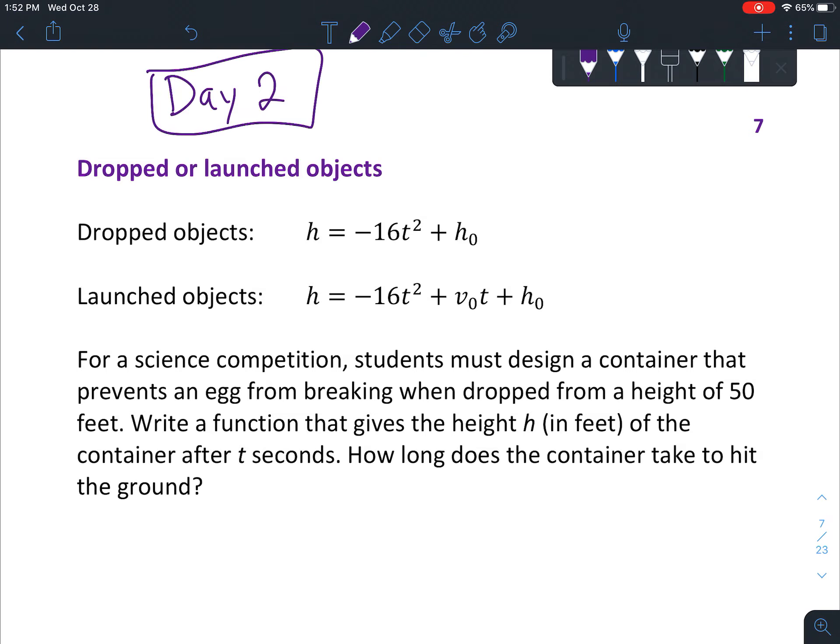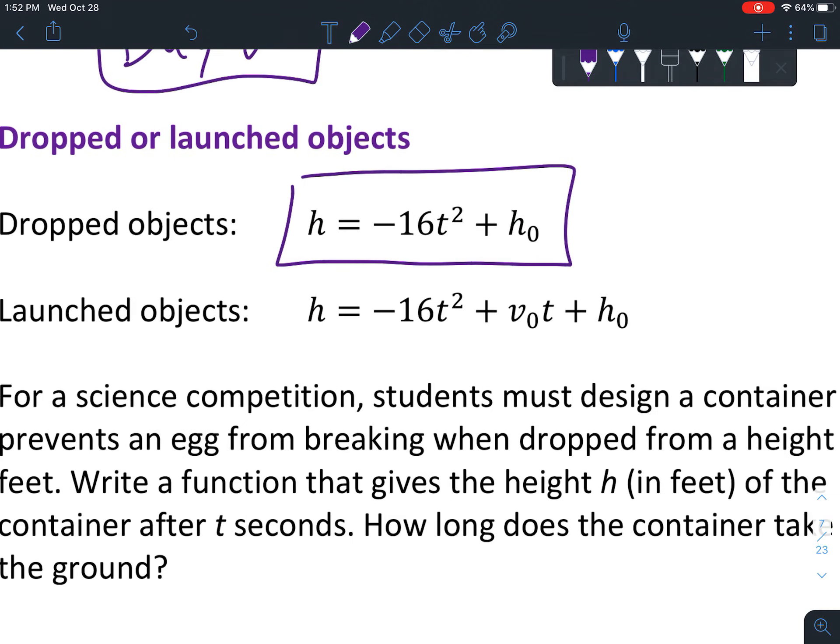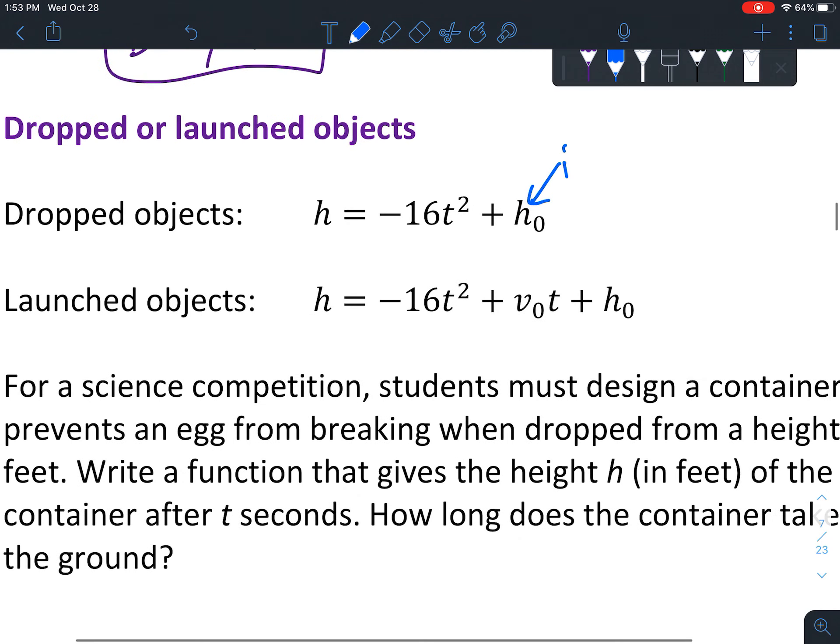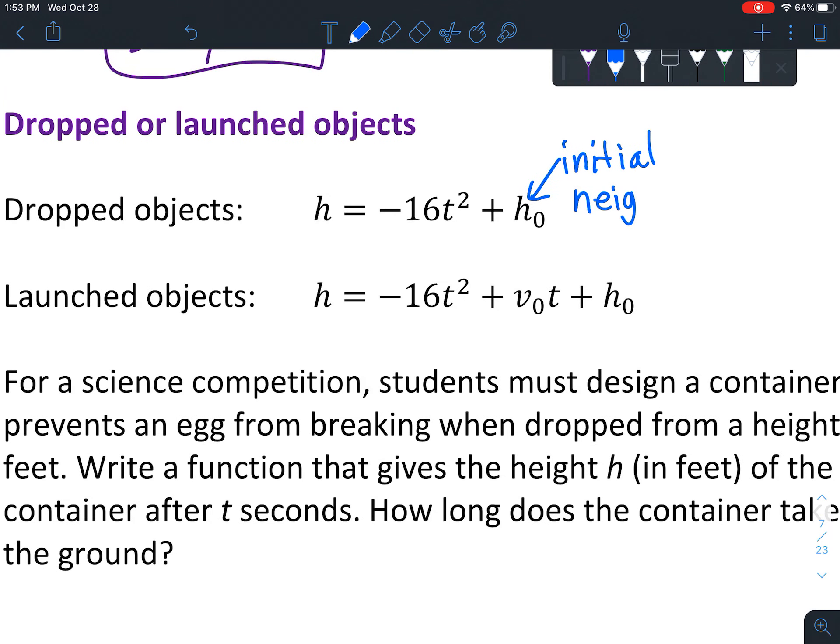So when you drop an object, because of the way gravity acts on it, there's a specific formula that you can use. And this one uses the units of h naught is the initial height in feet. So wherever you start from, however high up you are, and then it falls according to how much time it's falling. And then this will tell you how fast it's falling.